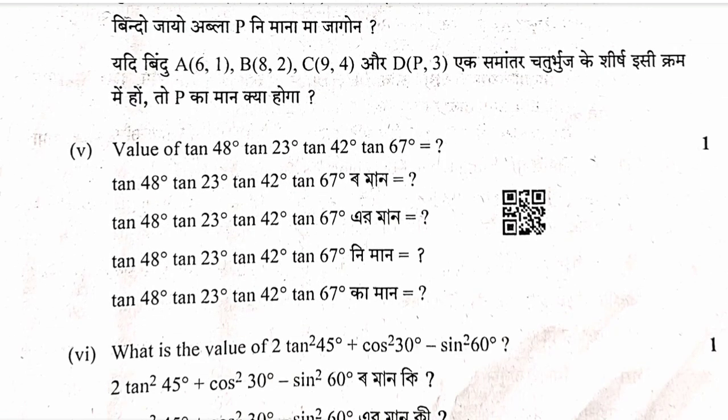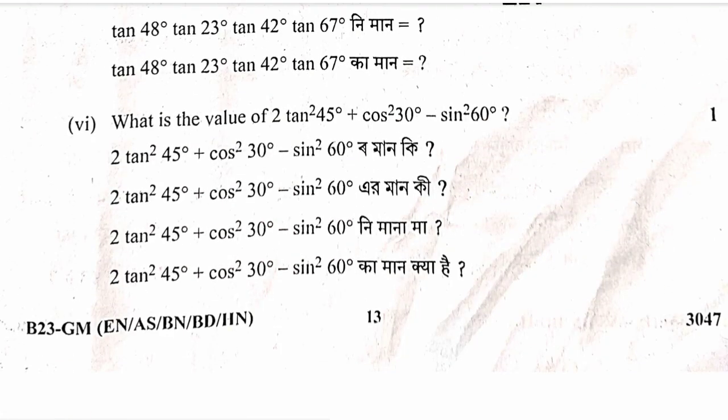Trigonometry questions: evaluating sin and cos values at angles like 30 degrees, 45 degrees, 60 degrees. For example, evaluating expressions involving sin squared and cos squared using standard trigonometric identities.